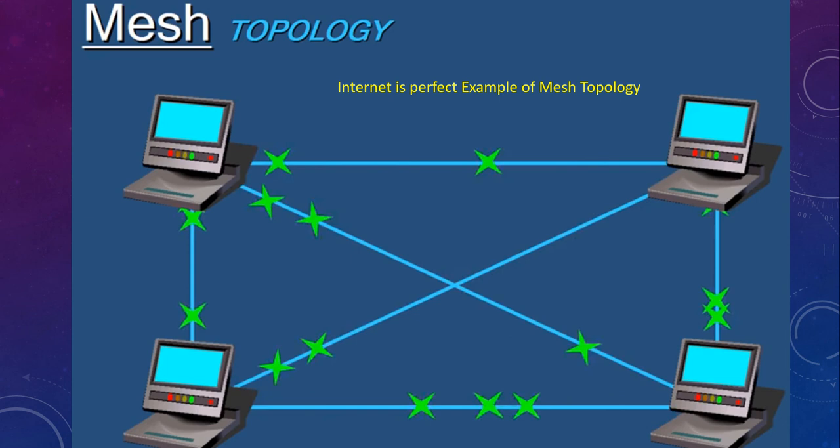Then we have mesh topology, where every machine is connected to every other machine. It provides redundancy and there is no single point of failure. If a connection goes down, a device is still able to communicate through other routes. The internet is the perfect example of mesh topology. Note that this is an expensive technology because of the large amount of cabling and connectors required.